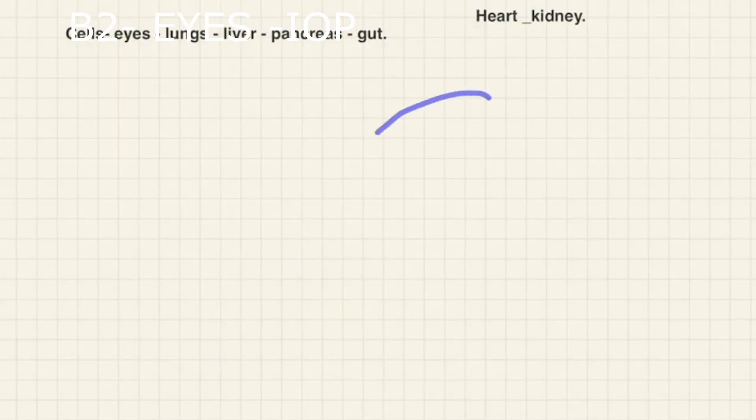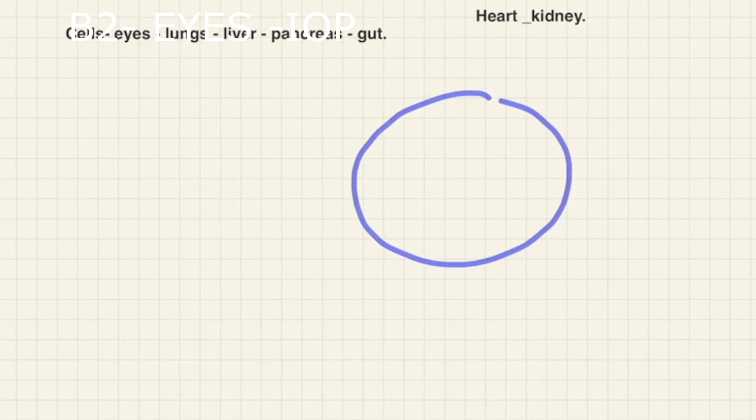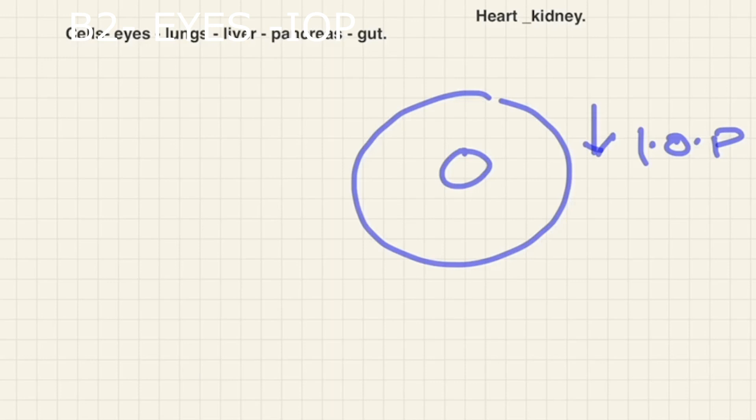Next, think about the action on the eyes. The ciliary bodies contain beta receptors, and blockage of beta receptors in the ciliary bodies of the eyes leads to reduction in the production of intraocular fluid — the aqueous humor. So beta blockade decreases the intraocular pressure and can be used for glaucoma.